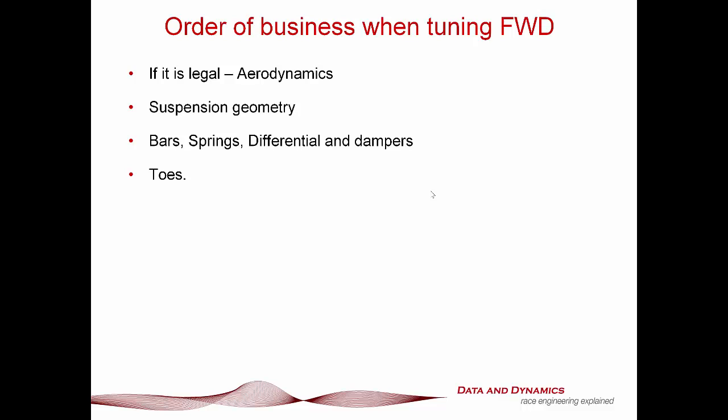Given all that, here is our order of business when tuning a front wheel drive car. If it's legal: aerodynamics first. Then suspension geometries, bar, springs, diff, and dampers. The final finishing touch is toe — and toe is going to play a bit more of a role than you might first think. Going into this analysis, I thought toe was just the cherry on top, but there's a bit more to it than that. It's probably not as significant as geometry, bar, springs, and diffs, but for front wheel drive, to ignore it would just be silly.